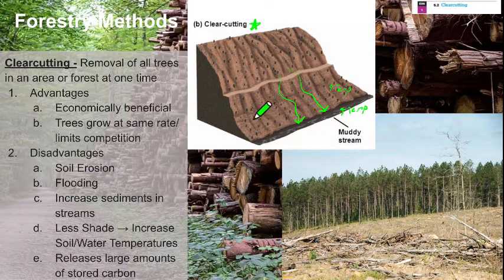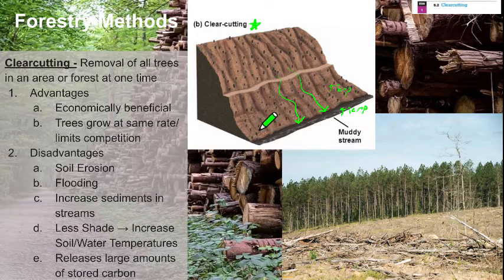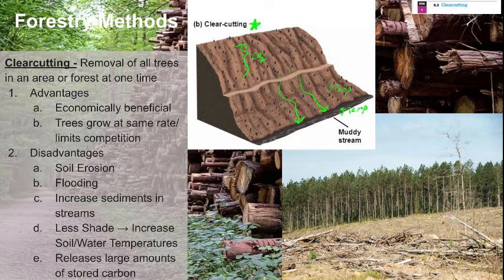Clear cutting can also lead to excess flooding and removes carbon stores. Forests are carbon sinks — they take CO2 from the atmosphere and store it in their cells. When trees are chopped down and the material is burned or allowed to decompose, that CO2 is released back into the environment. The more forest we remove, the more carbon is released into the atmosphere.